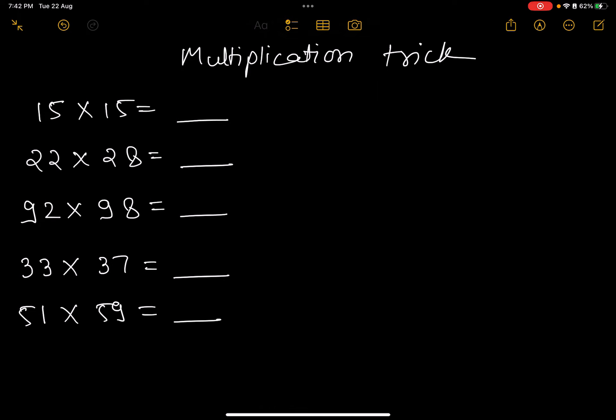What if I told you I can multiply these numbers within a minute? 15×15 equals 225, 22×28 equals 616, 92×98 equals 9016, 33×37 equals 1221, and 51×59 equals... sorry,